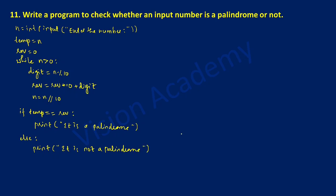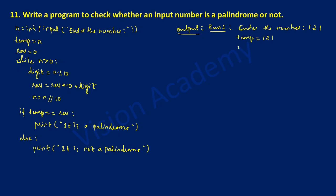Now let us check out the result. I'm going to write the output and execute this program twice. For the first execution, run one: once we execute this program it will ask the user to enter the number. I'll enter 121. temp is equal to n, so temp holds 121. Reverse is equal to 0. Now we check the while condition: n is 121, and 121 is greater than 0, so the condition is true.